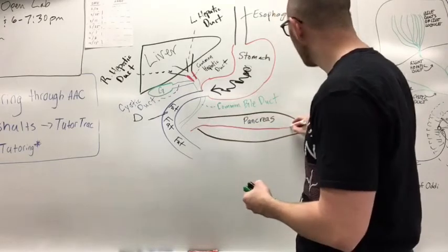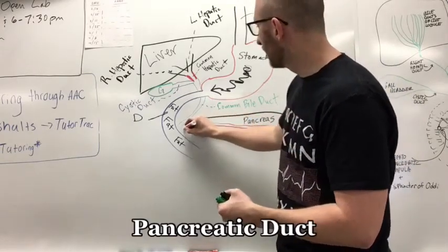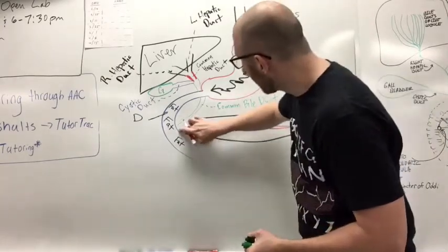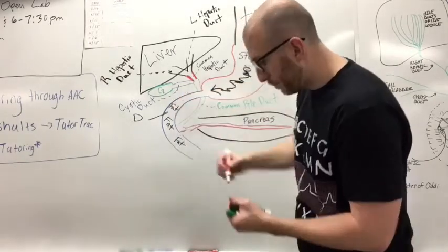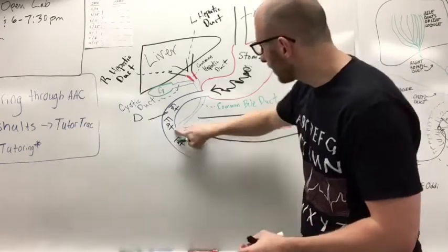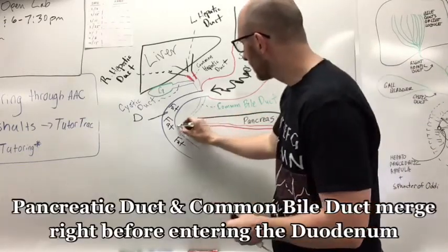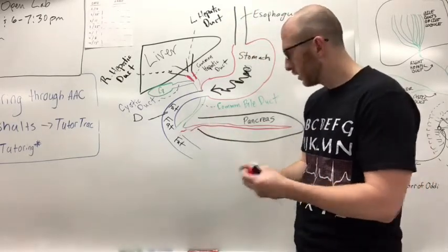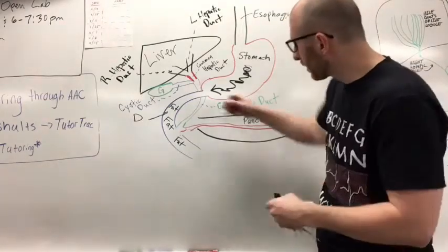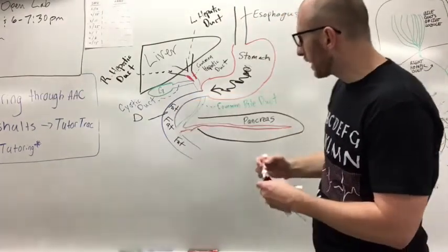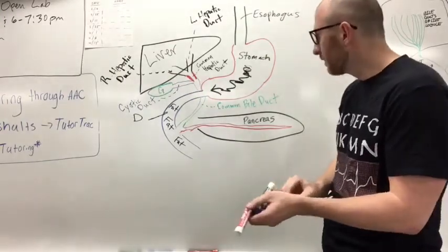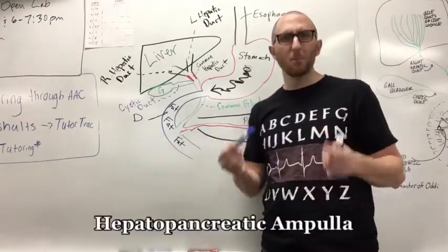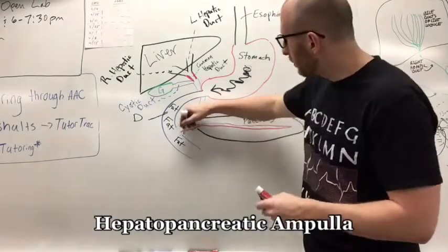So this duct coming over would be the pancreatic duct. And right before it enters, it merges. So we've got the pancreatic duct coming over, we've got the common bile duct coming down, and they're going to enter into the duodenum at a place called the hepatopancreatic ampulla. Also called the sphincter of Oddi.